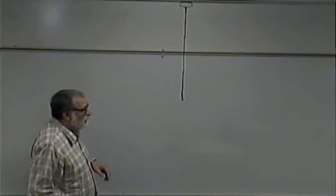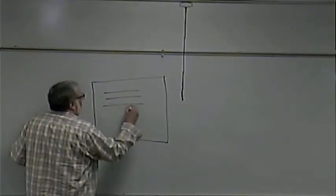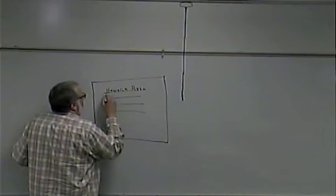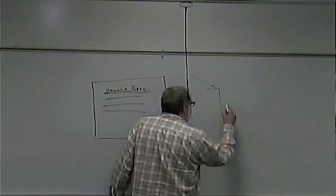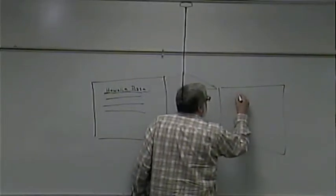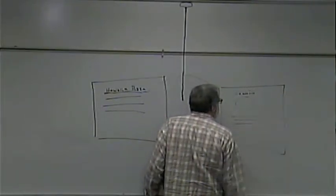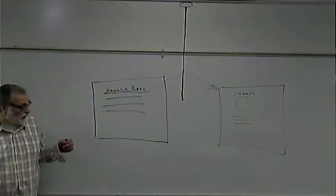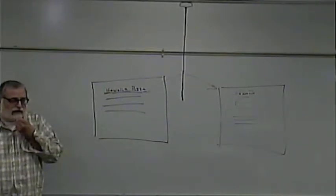Let's review what we're doing today. We talked about having a page that had a list of specialty pizzas, where each pizza name is going to be a link. When we click on it, we go to a detail page that shows the name of the pizza, a picture of the pizza, and a list of the toppings on it.